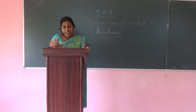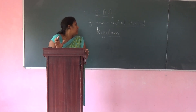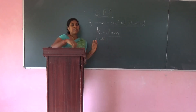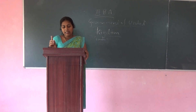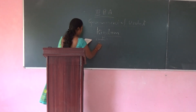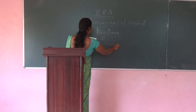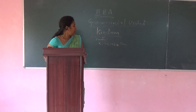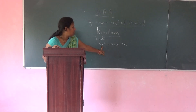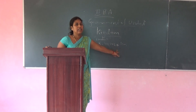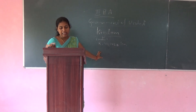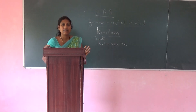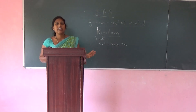Great Britain has London as its capital city. The area of Great Britain is approximately 244,108 square kilometers. The main language of Great Britain is English.